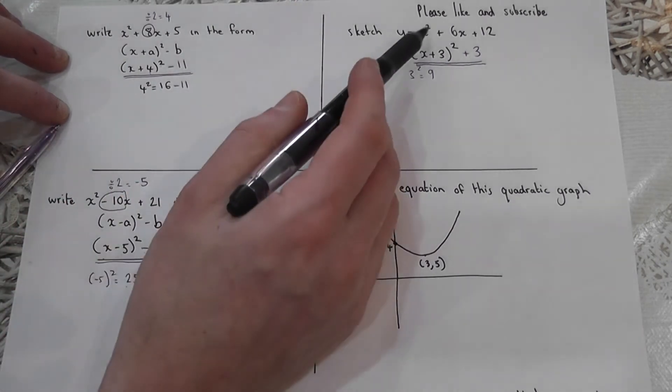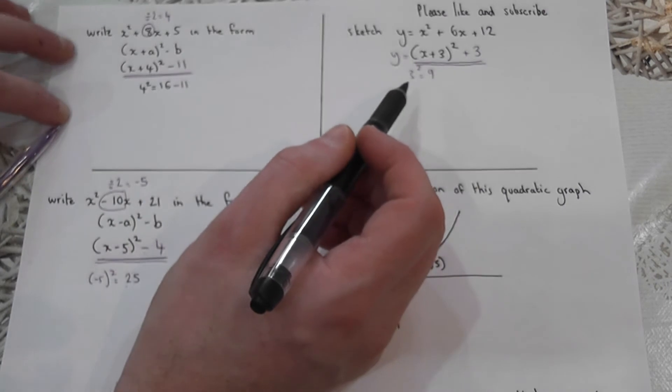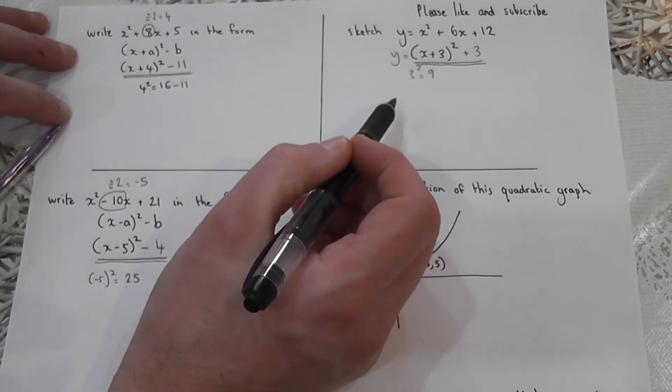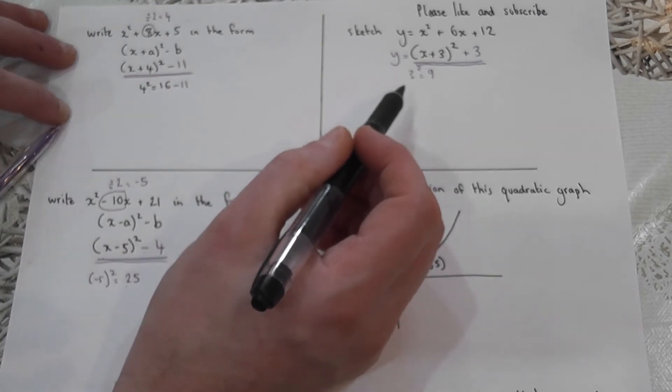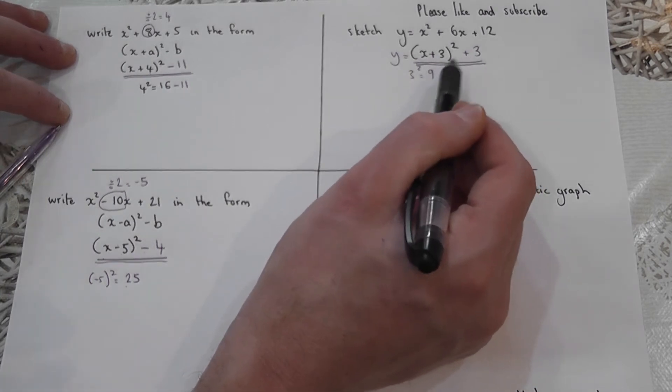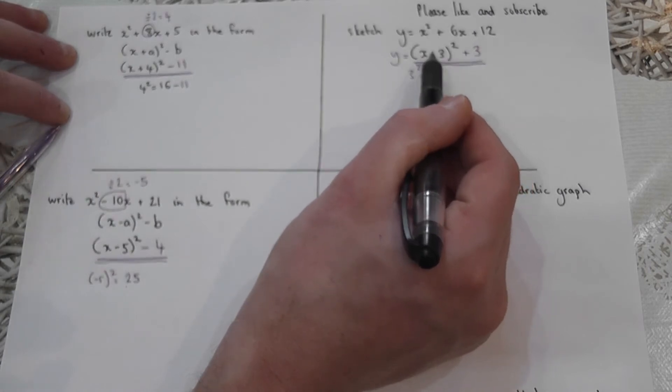Now this lets me sketch the x squared graph really easily, because I can now find what's called the coordinate of the vertex. To get the vertex, which I'll show you what it is in a moment, I do a very simple thing. There are two numbers here, which can be the same or they can be different.